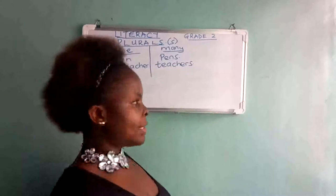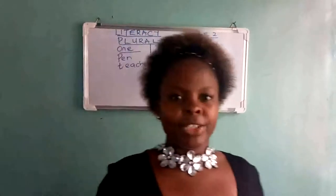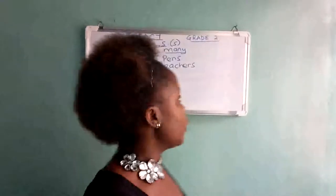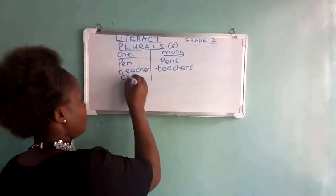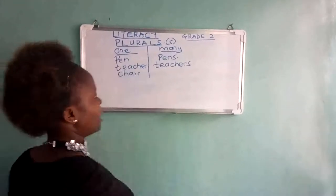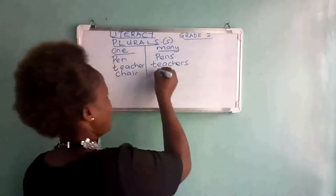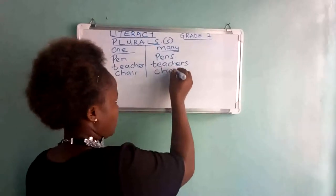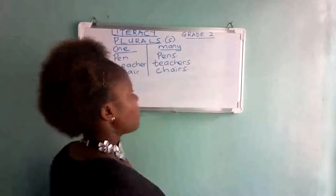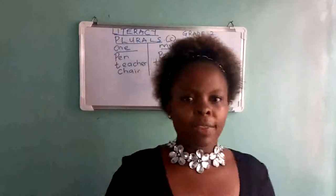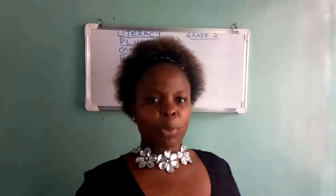Another example — where you sit is called a chair. Chair is one. And if many of you are sitting in various chairs, you'll say chairs. So, adding S to the word that you are given makes it a plural.